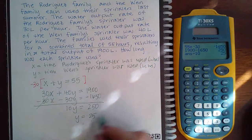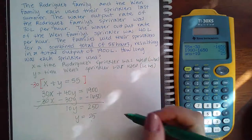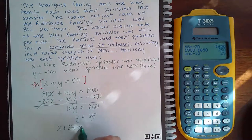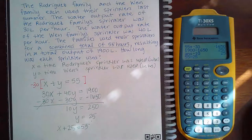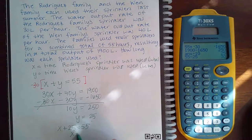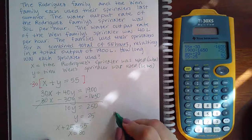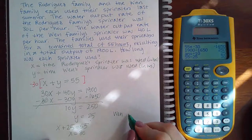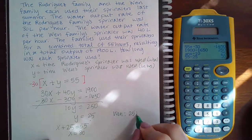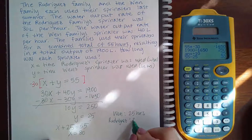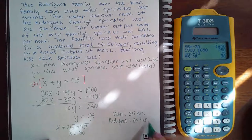To figure out what X is, I go back to the top equation and say X plus 25 equals 55. If I subtract 25 from both sides, I get X equals 30. So the Rodriguez family used their sprinkler for 30 hours, and the Wynn family used theirs for 25 hours.